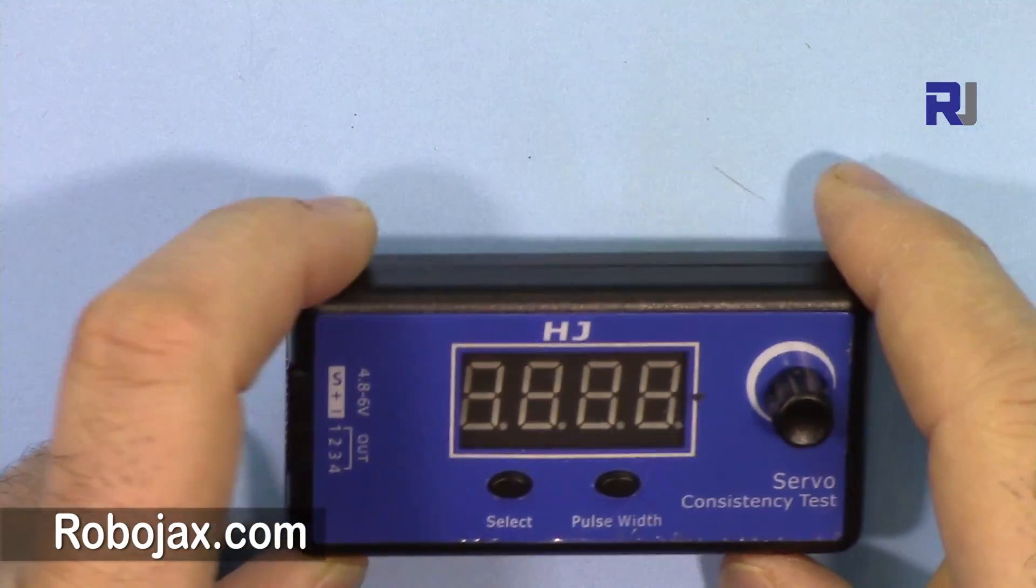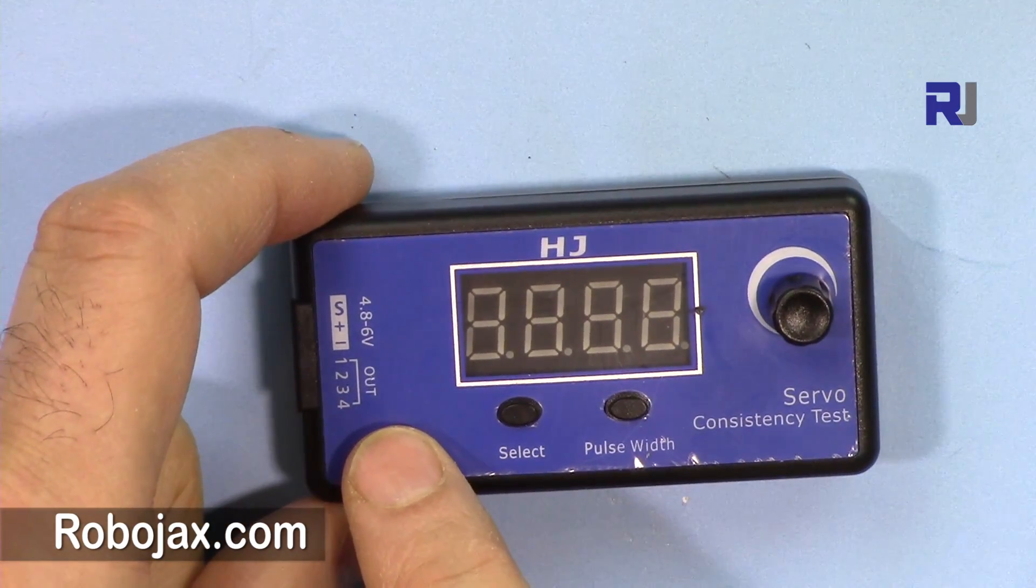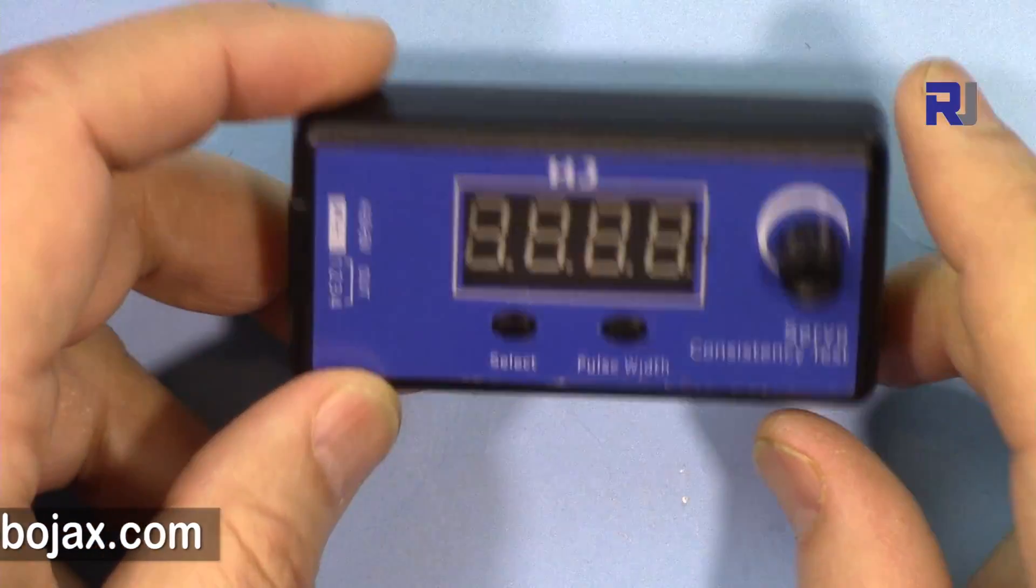This is a servo tester. HJ can test simultaneously up to four servos and it's sold around $25 on Amazon.